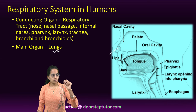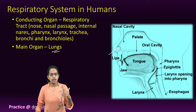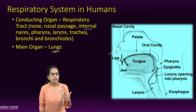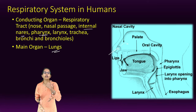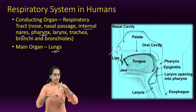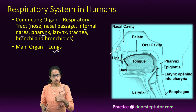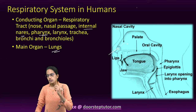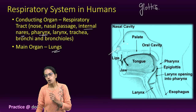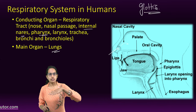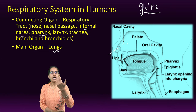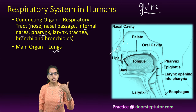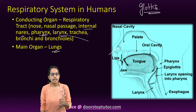Then there is the nasal passage, internal layers, and the pharynx. The role of the pharynx is very important — this is where the food pipe (esophagus) and the wind pipe (trachea) both move simultaneously. The glottis is the opening of the trachea, and the epiglottis is the lid for it. When swallowing food, the epiglottis closes the wind pipe and the food pipe opens.